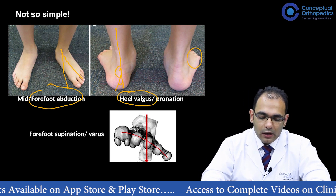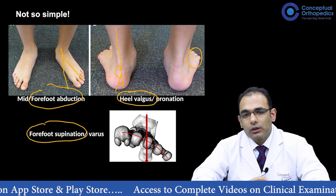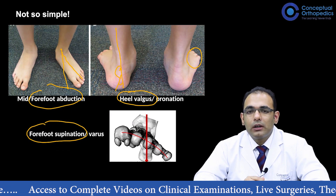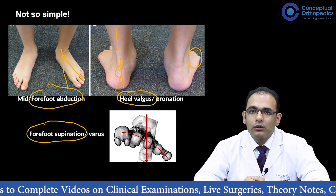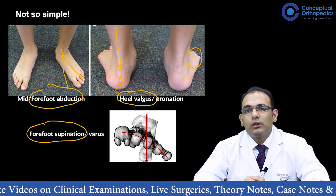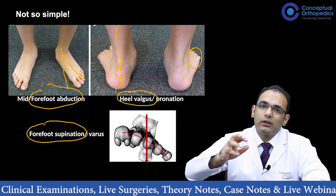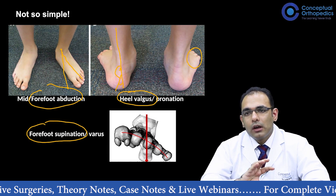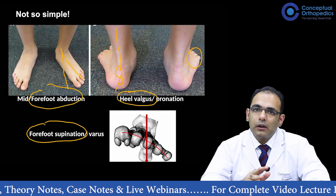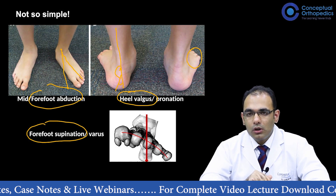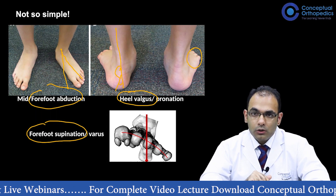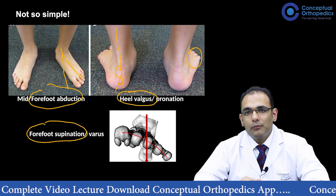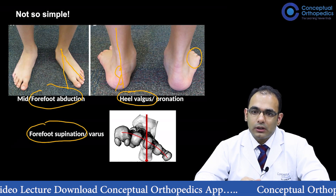Another deformity that happens at the forefoot is supination, sometimes called forefoot varus. This deformity happens to compensate for the heel valgus at the hindfoot. To maintain the tripod, the patient always touches the heel, the first metatarsal head, and the fifth metatarsal head. Because of the hindfoot valgus, there is a compensatory forefoot varus or forefoot supination to maintain this tripod. Initially this supination is compensatory, but as time progresses it can become fixed and might need to be addressed surgically.